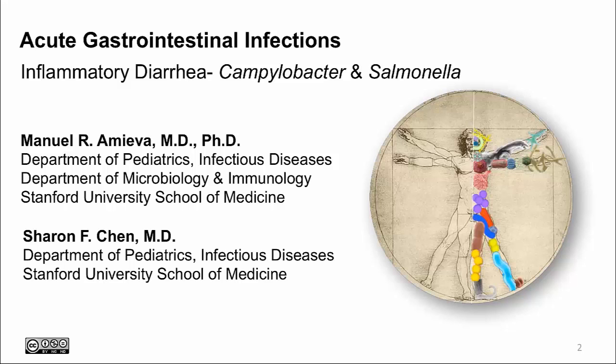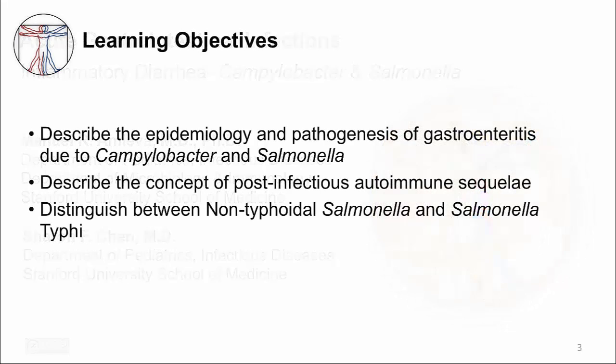A previous video discussed Shigatoxigenic E. coli and Shigella. The learning objectives are to describe the epidemiology and pathogenesis of gastroenteritis due to Campylobacter and Salmonella, to describe the concept of post-infectious autoimmune sequelae, and to distinguish between non-typhoidal Salmonella and Salmonella typhi.